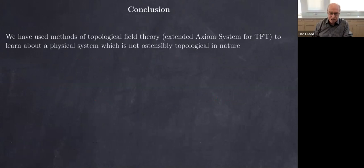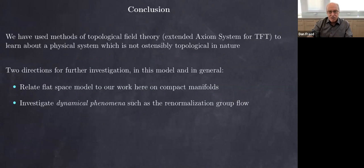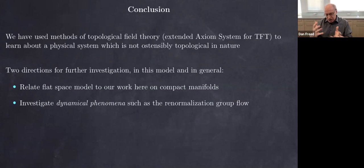We've taken this physical system and morphed it more and more into a place where we could apply these tools in topology. There are a lot of things one would still want to do: relating this to the flat space model we started with (how do compact manifolds relate to flat space), and understanding some dynamical phenomena I didn't have time to talk about — the renormalization group flow. These are basic questions for understanding discrete models from condensed matter physics and quantum field theories in general. Let me stop there and thank you for your attention.